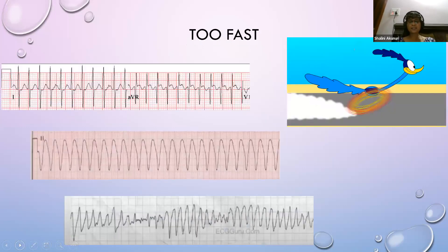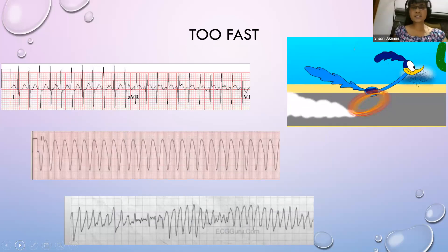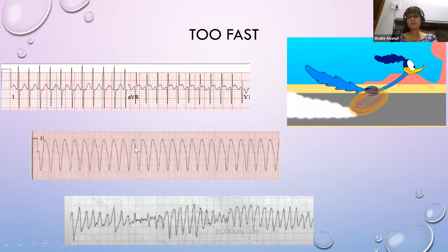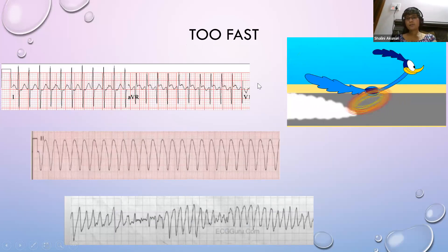For slow or bradyarrhythmias, the cause can be sinus node dysfunction or a problem in the AV node. Classification is also based on pulse - too fast or too slow. If there is no pulse, there are four categories: asystole, PEA (pulseless electrical activity), ventricular fibrillation, and pulseless ventricular tachycardia.